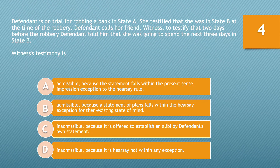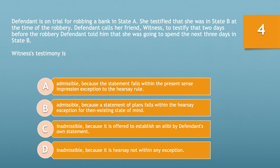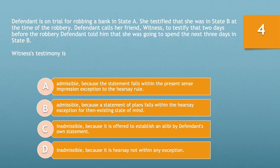Question number 4. Defendant is on trial for robbing a bank in state A. She testified that she was in state B at the time of the robbery. Defendant calls her friend, witness, to testify that two days before the robbery, defendant told them that she was going to spend the next three days in state B. Witness's testimony is: A. Admissible because the statement falls within the present sense impression exception to the hearsay rule. B. Admissible because a statement of plans falls within the hearsay exception for then-existing state of mind. C. Inadmissible because it is offered to establish an alibi by defendant's own statement. Or D. Inadmissible because it is hearsay not within any exception. Take 10 seconds and choose the best answer.